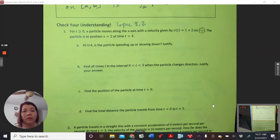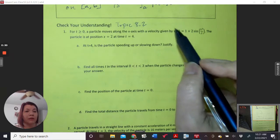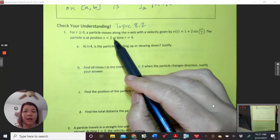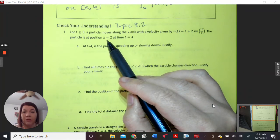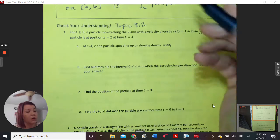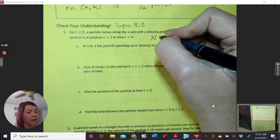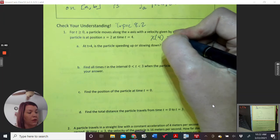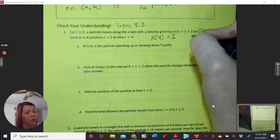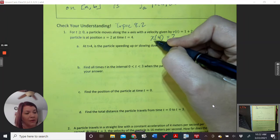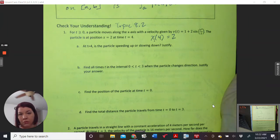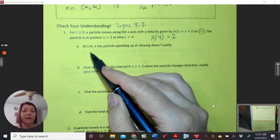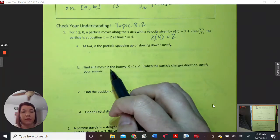For a particle moving along the x-axis with a velocity given by this expression, the particle position is at position x equals 2 at time 4. So in other words, x of 4 is 2, or, and you can use s or x for position. Depends on what we're doing. At time, is a particle speeding up or slowing down.